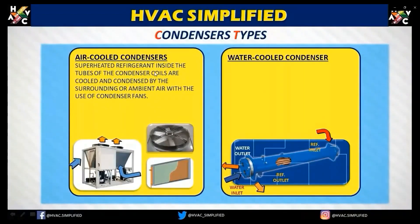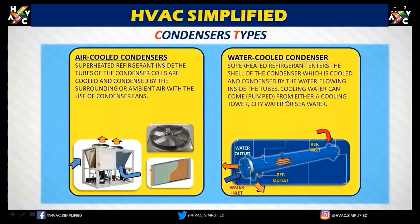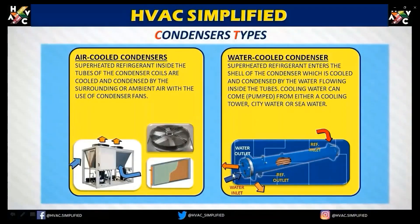Superheated refrigerant inside the tube of the condenser coil is cooled and condensed by the surrounding ambient air using condenser fans. In a water-cooled condenser, superheated refrigerant enters the shell and is cooled and condensed by water flowing inside the tubes. Cooling water can be pumped from either a cooling tower, city water, or seawater — it is a shell and tube type where water acts as the medium.